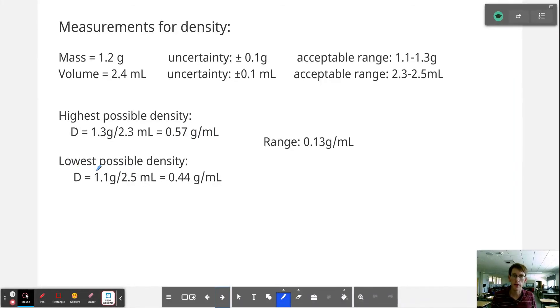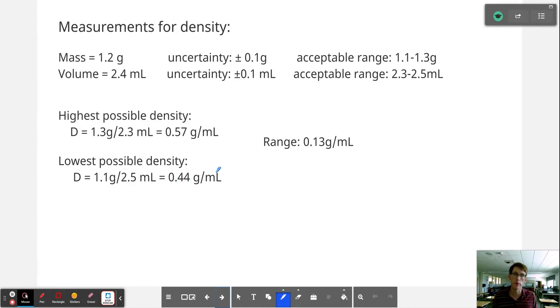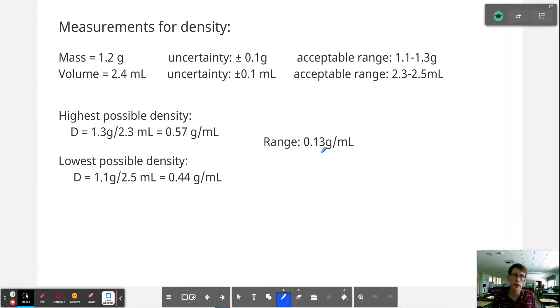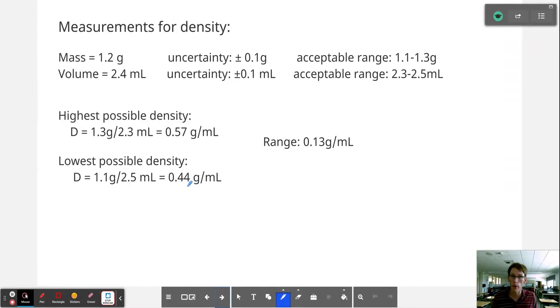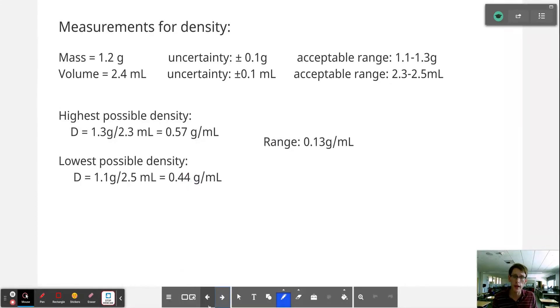And the lowest possible density would be where we have the lowest mass within that acceptable range and the highest volume, which gives us 0.44 grams per milliliter. That is a range of 0.13 grams per milliliter between the highest and the lowest, which actually is a very significant difference. It's about 30 percent. 0.57 is about 30 percent higher than 0.44. So there's a pretty big variation here.